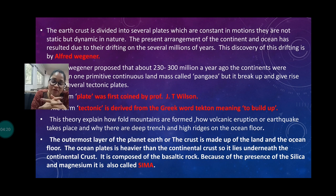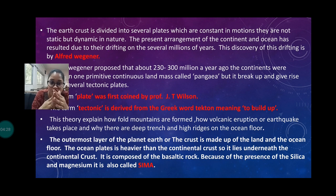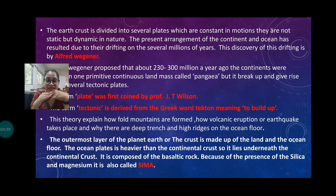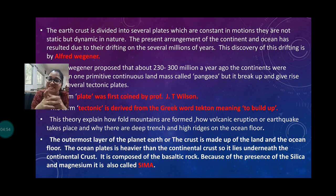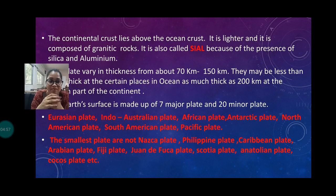The outermost layer of the planet — known as the earth's crust — is made up of land and ocean floor, meaning continental plates and oceanic plates. The oceanic plate is heavier than the continental plate, so it always goes underneath the continental crust. The continental crust is made up of silica and aluminum, known as SIAL, and the oceanic crust is made up of silica and magnesium, known as SIMA.